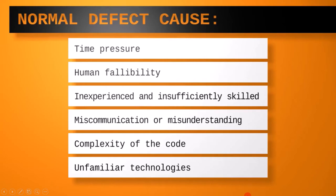Here, we have six different causes: time pressure, human fallibility, inexperienced and insufficiently skilled people, miscommunication or misunderstanding, complexity of the code, and unfamiliar technologies.